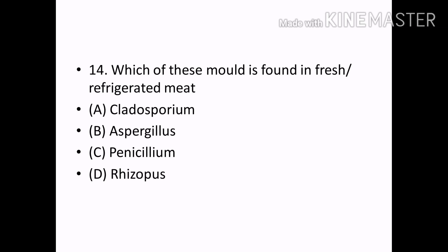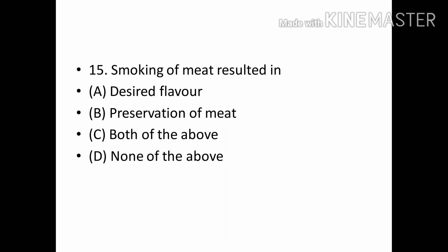Smoking of meat resulted in: Options — Desired flavour, preservation of meat, both of the above, none of the above. Correct answer: Option C — Both of the above.